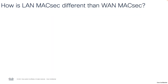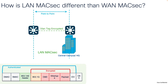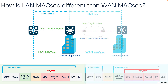A common question is how LAN MACsec differs from WAN MACsec. LAN MACsec was designed for local area networks; it works well in a contained environment to provide secure point-to-point connections on a single LAN segment.